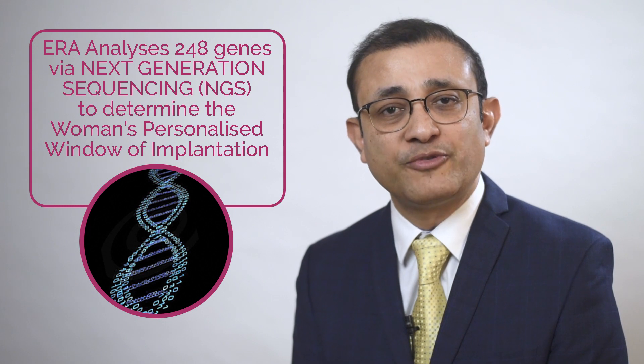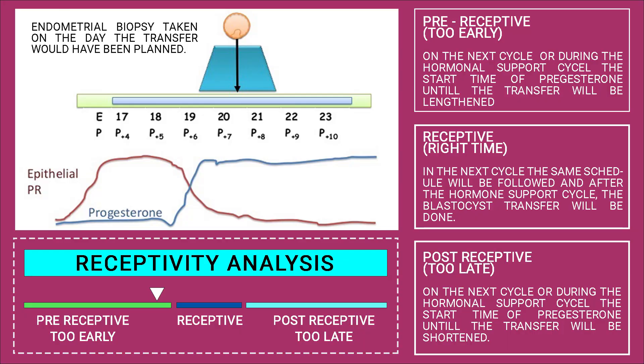This is where ERA — the Endometrial Receptivity Array — comes in. When we have decided to do your embryo transfer, we give you certain medicines to prepare your lining, perform ultrasounds and blood tests, and decide on a particular day for transfer. For an ERA, on that day we do not do the embryo transfer. Instead, we take a very small biopsy of your womb lining and send it for testing. The lab analyses 248 genes connected with endometrial receptivity and tells us whether your womb was receptive on that day, and if not, whether to transfer one day earlier or one day later than the biopsy day.